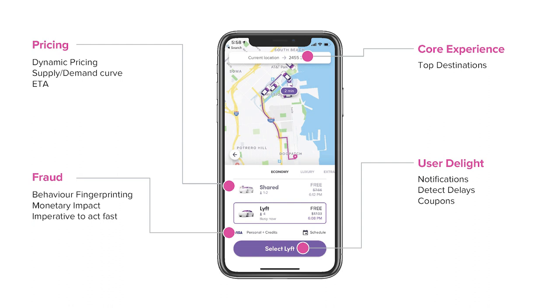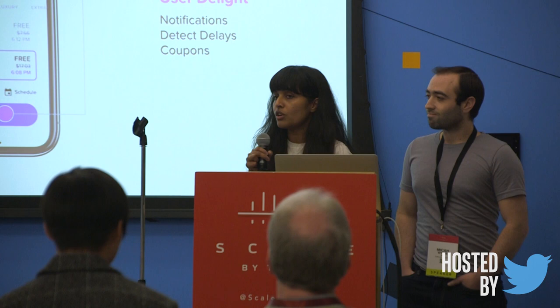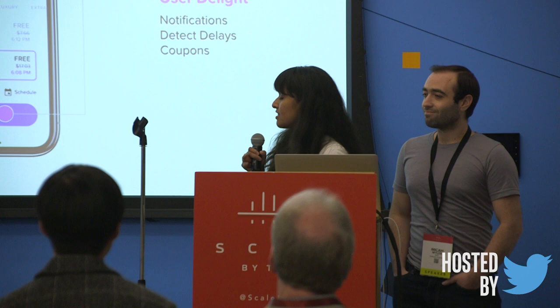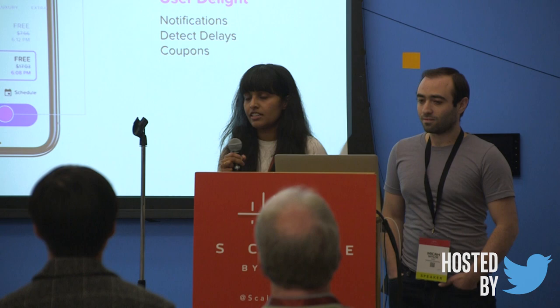To achieve any of these use cases, we make a lot of decisions in real time. For example, in the case of pricing, we have dynamic pricing and we take into account real-time supply-demand curves and ETAs. These change a lot based on traffic and many other things, so we want to make sure we are making these decisions in real time. We also want to combat fraud on the platform because there can be real monetary consequences. And we want to make sure our users are getting notified if their ride is getting delayed or if there's an ETA mismatch.